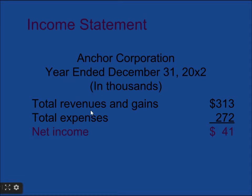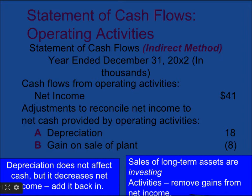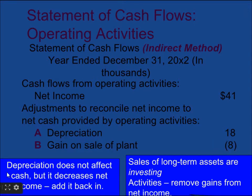Total expenses are deducted from total revenue to get net income of $41. The statement of cash flow for operating activities under the indirect method starts with net income of $41. We then add depreciation — a non-cash transaction, so we add it back — and deduct the gain on sale of plant asset, also a non-cash transaction. Depreciation does not affect cash but decreases net income, so it's added back.